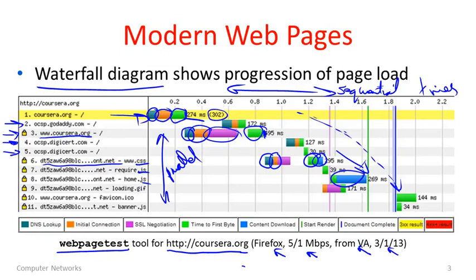Eventually we're getting up to speed, something's beginning to use the network and content is coming through. There's a blue line here — the document complete line — which means we've gotten everything needed for the initial page. The rendering of the initial page actually started earlier, so our computer started displaying it on screen, but it could change until the document was complete. After the document's complete, scripts could be running on the page causing other information to be fetched, as well as the strange things that happen inside web browsers.